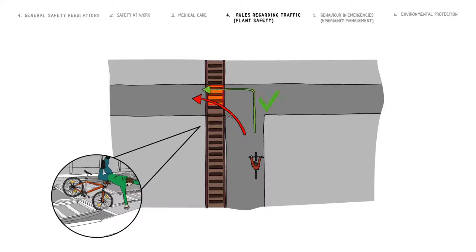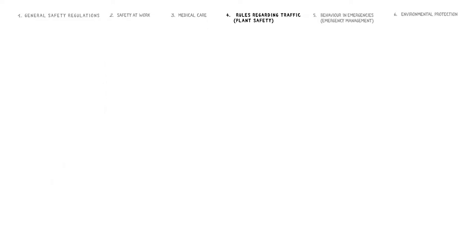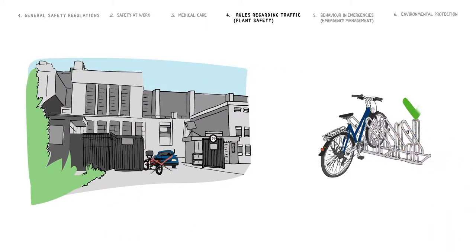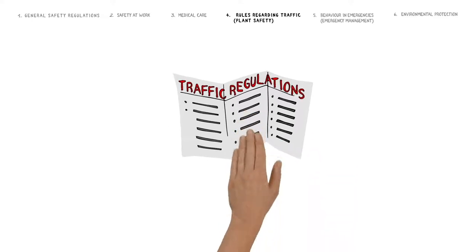In doing so, pay attention to any reversing vehicles. Bicycles must be parked in the bicycle stands provided. Further information can be found in the Traffic Regulations Leaflet, which is available at the gates.